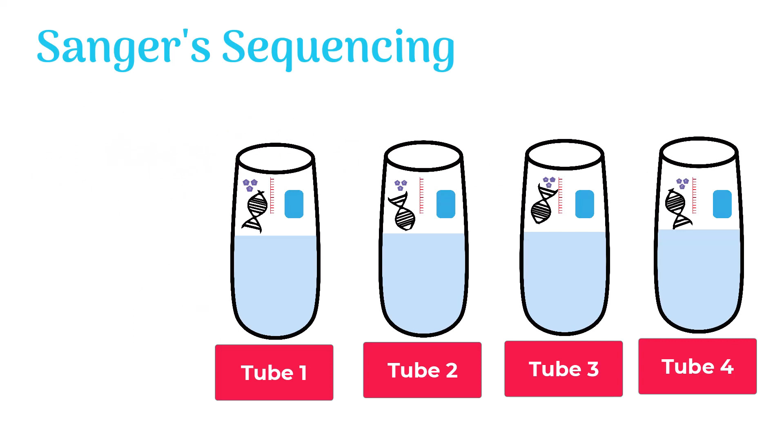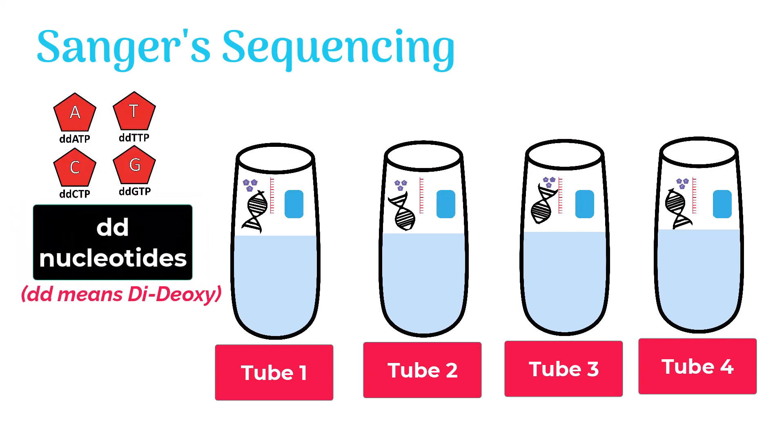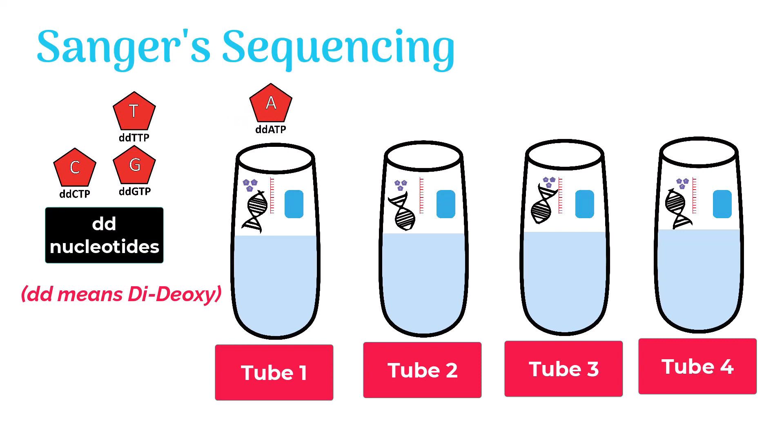All these requirements are fulfilled in every tube. Besides them, there is a unique addition in every tube: the addition of very low amount of dideoxynucleotides. The first tube has dideoxy ATP, the second tube contains dideoxy TTP, and the third tube includes dideoxy GTP.